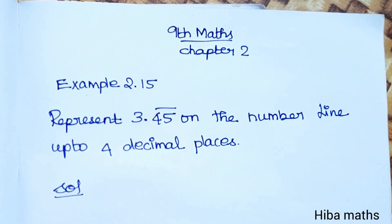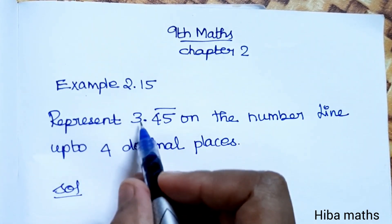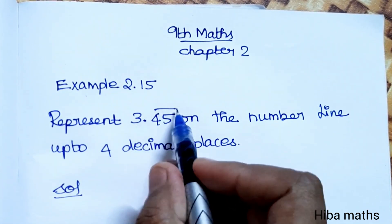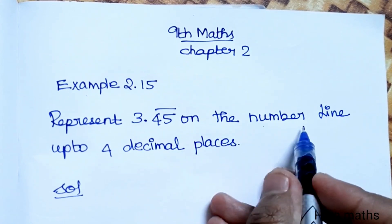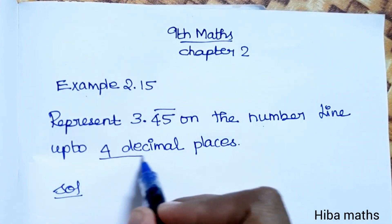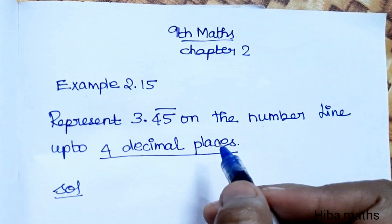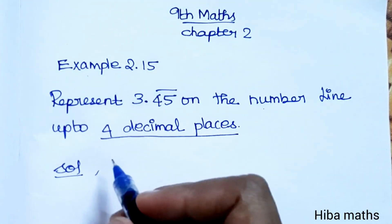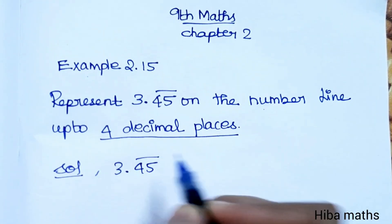Hello students, welcome to Hibamax 9 Standard Max Chapter 2 Example 2.15. Represent 3.45 on the number line up to 4 decimal places. The value is 3.45.